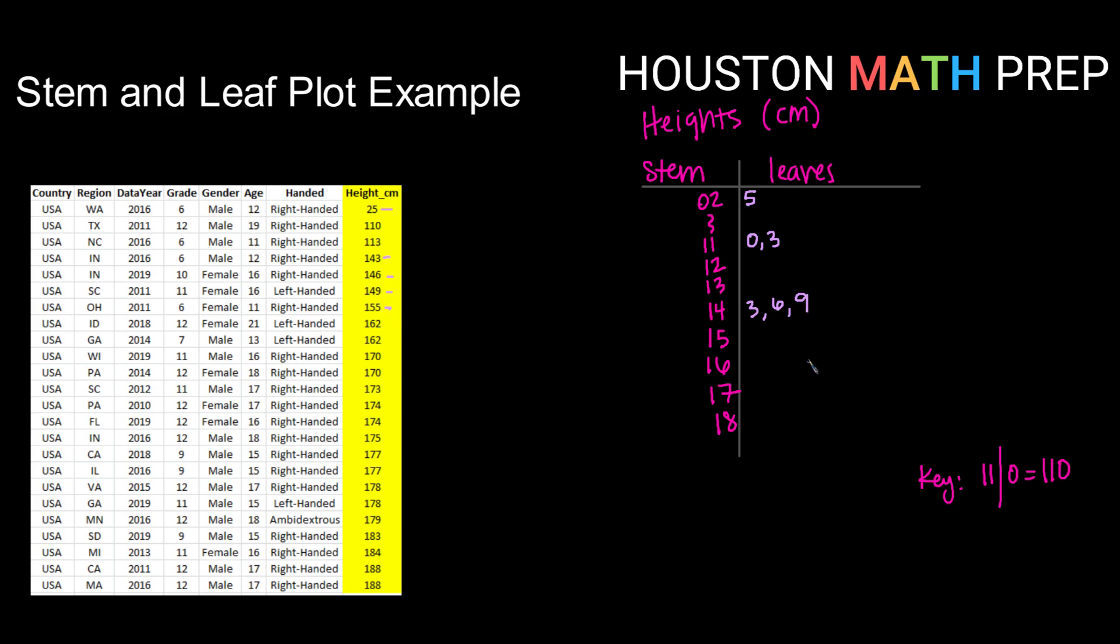I only have one data value in the 15 stem. That is 155. In the 160s, I have 2. So I have 2 comma 2. If a data value appears more than once, make sure that you list it that many times. I have lots of 70s here.